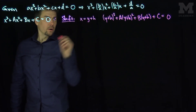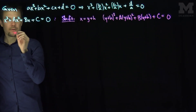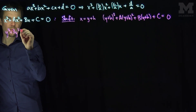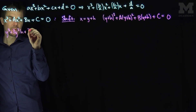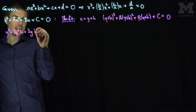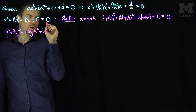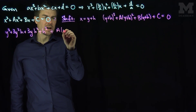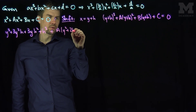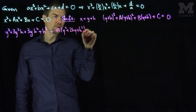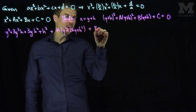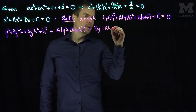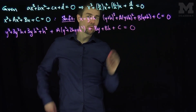Now I'll use the cubic expansion on that first term. We'll get y³ + 3y²h + 3yh² + h³ + A(y² + 2hy + h²) + By + Bh + C = 0.